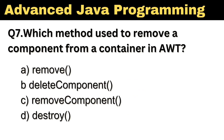Question number 7: Which method is used to remove a component from a container in AWT? The right answer is Option A: remove.